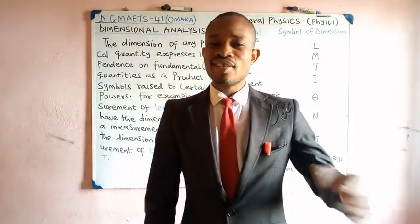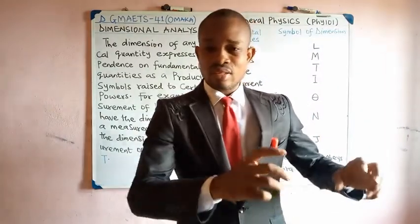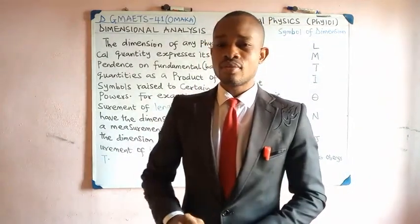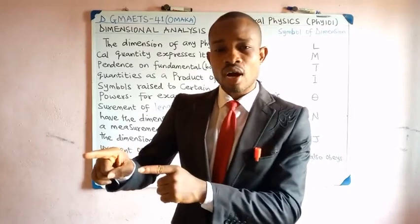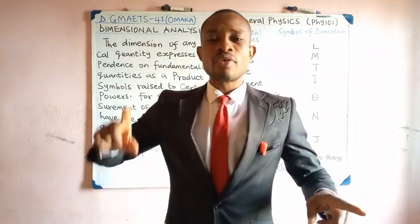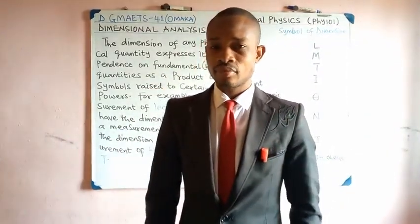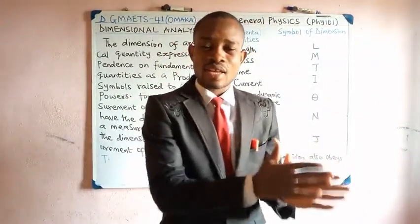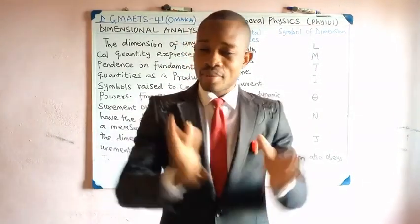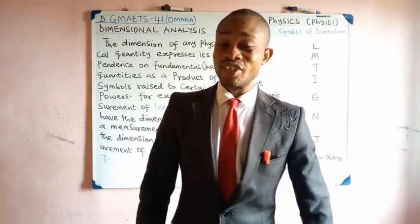We know by definition velocity is displacement over time. We are going to link that velocity to fundamental quantities — get the dimension of that velocity from fundamental quantities. So the dimension of velocity depends on fundamental quantities as a product of symbols raised to a given power.